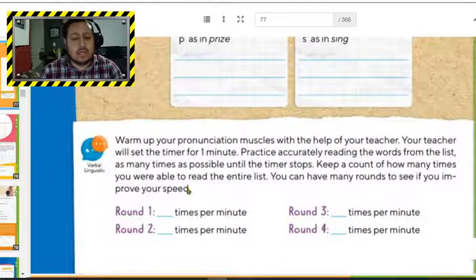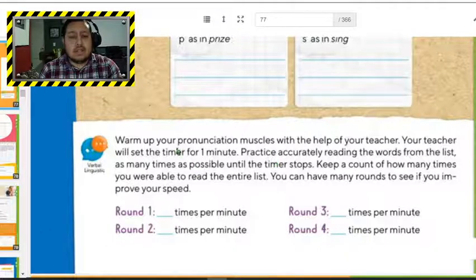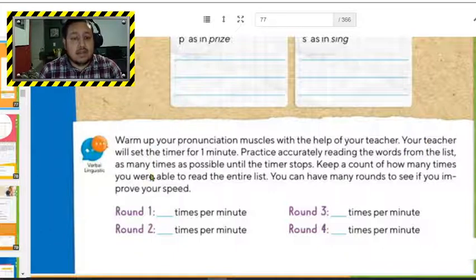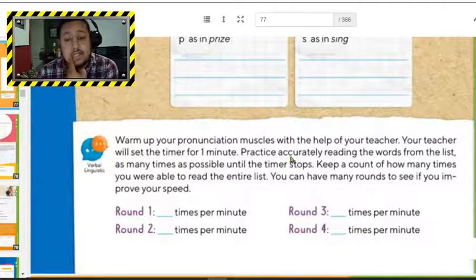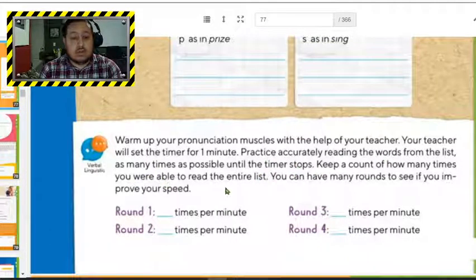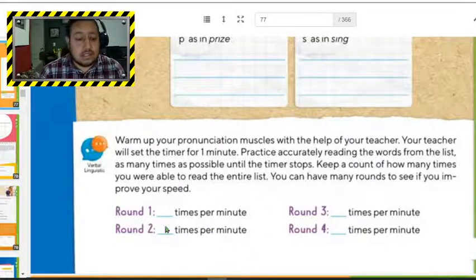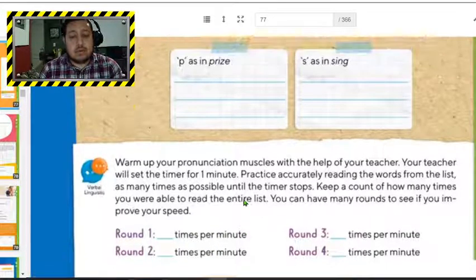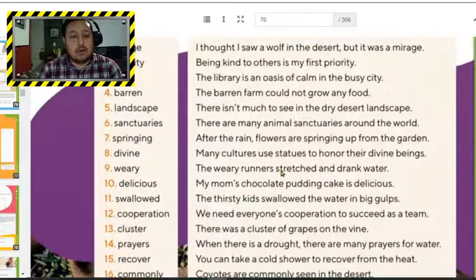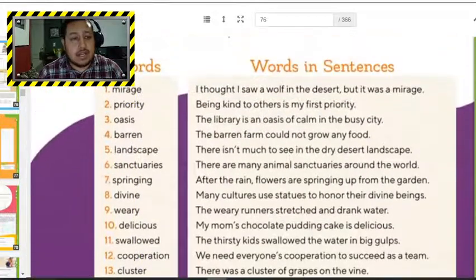Here, this activity, unfortunately, we're not going to do it in groups. You're going to do it by yourselves. It says here, warm up your pronunciation muscle with the help of your teacher. But this time is going to be you. And you need to set up a timer for one minute. Practice accurately reading the words from the list. So many times as possible until the timer stops. Keep account of how many words you were able to read the entire list. You can have many rounds to see if you improve your speed. So let's say that I have a minute. And then you go like mirage, priority, oasis, barren, landscape,